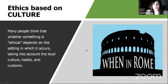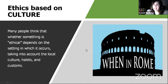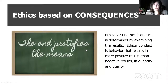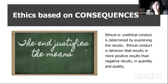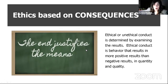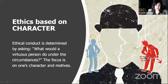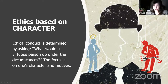We have ethics based on culture. Many people think that whether something is ethical depends on the setting in which it occurs, taking into account local culture, habits, and customs — 'this is the way we've always done things in Middletown.' We also have ethics based on consequences, where the end justifies the means, meaning ethical conduct is determined by looking at results — behavior that produces more positive than negative outcomes in quantity and quality.